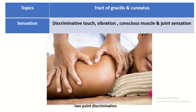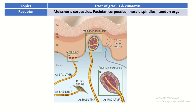What type of sensation is carried by the tract of gracilis and cuneatus? It carries fine touch, vibration, and conscious muscle and joint sensation. This sensation is carried by special types of receptors: Meissner's corpuscle, Pacinian corpuscle, muscle spindle, and tendon organ.